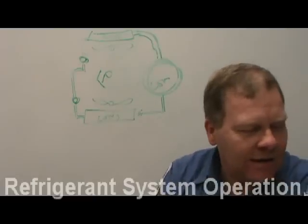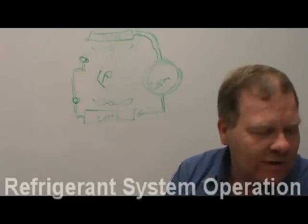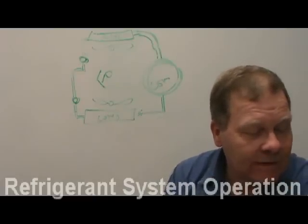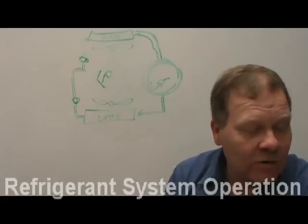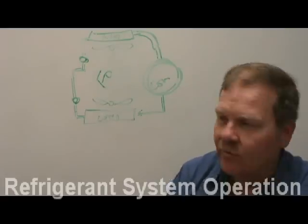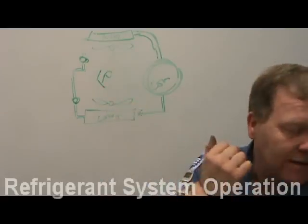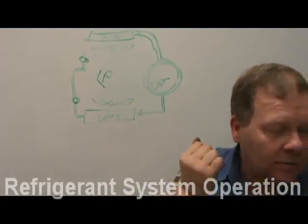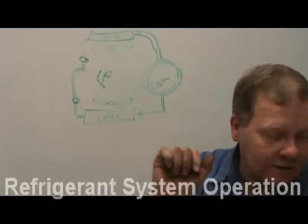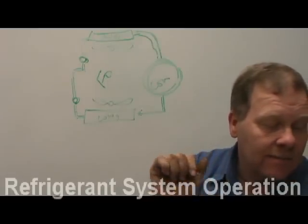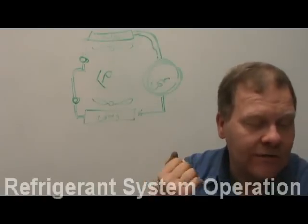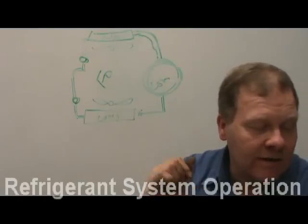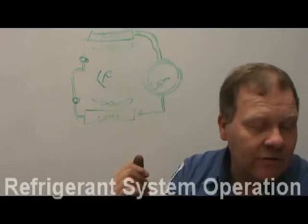An accumulator is very similar to a what? A receiver dryer. The accumulator is on the other side of the evaporator. If you've got an orifice tube, you're going to have an accumulator — remember that.